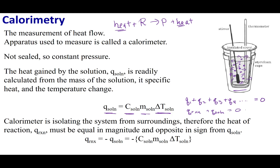I can rearrange the formula so that the heat of reaction equals the heat going into my solution. They're equal in magnitude but opposite in sign. So I can measure the heat of my reaction by taking the negative of the heat gained by my solution: Q_reaction = -C_solution × mass × ΔT. This is a good way to talk about the energetics of making and breaking bonds.